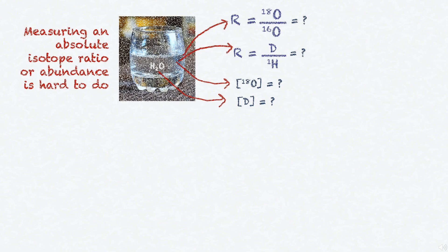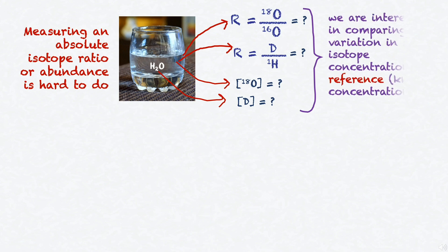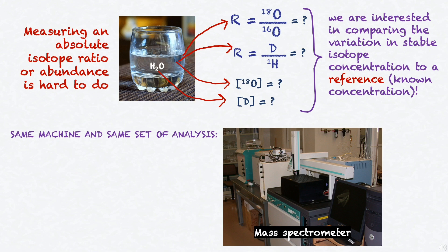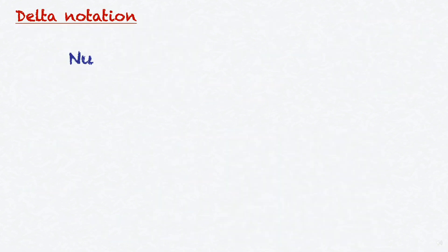Measuring an absolute isotope ratio or abundance is not easily done. Luckily, what we are interested in doing is comparing the variation in stable isotope concentration to a known concentration, rather than measuring a true ratio for the sample, which is difficult to do. We do this by measuring an apparent ratio in the sample, which can be easily done by gas-source mass spectrometry, and then measuring a known reference on the same machine at the same time. This way, we can compare our sample to the reference.